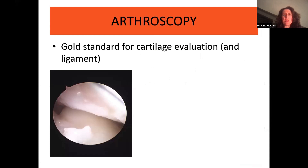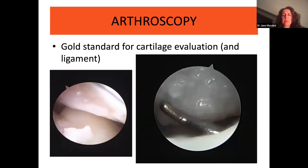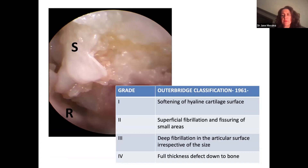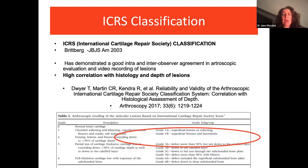Arthroscopy provides direct visualization of cartilage with magnification, allowing excellent assessment of cartilage damage — it is the gold standard for cartilage evaluation. We can use the Outerbridge classification to grade the damage. The ICRS classification is also helpful, demonstrating good intra- and inter-observer agreement in arthroscopic evaluation with high correlation with histology and depth of lesions. Up to stage 3a, there is still some useful cartilage remaining.